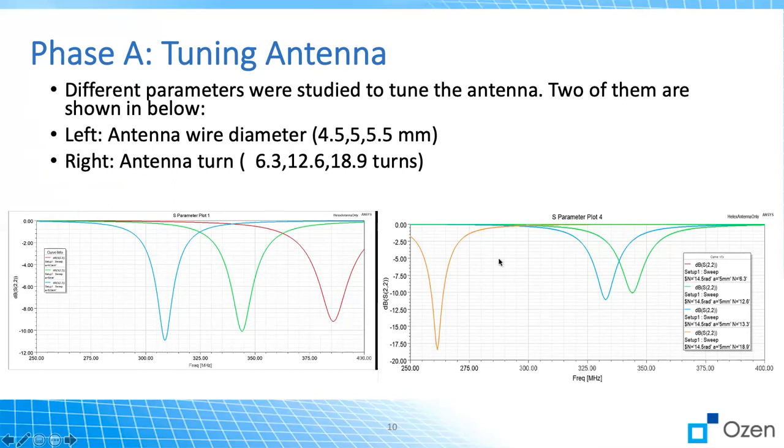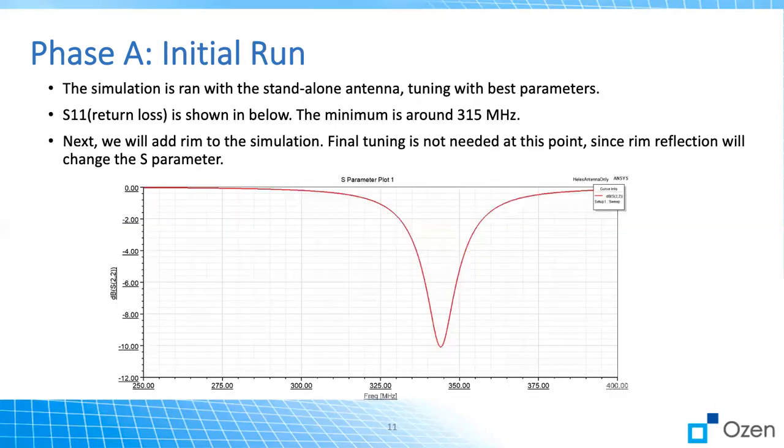We also use different turns. As you can see there are different turns. It's 6, 12 and 18 and it's not linear. It just jumps to this dip point. So we played with these different parameters and then ended up in having this initial run, which gives us the best S11. So as you can see it is around 315 MHz. That's our goal here because of the standard of car industry. And it's about minus 10 dB.